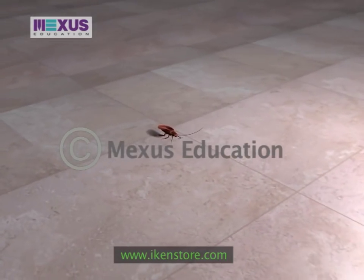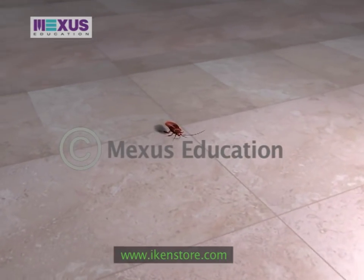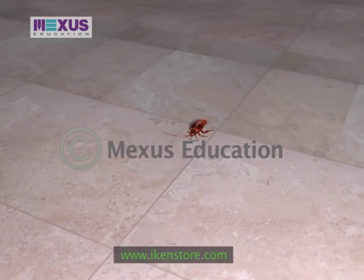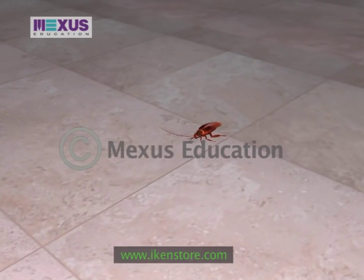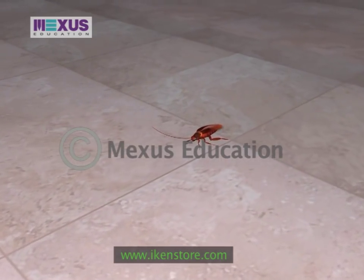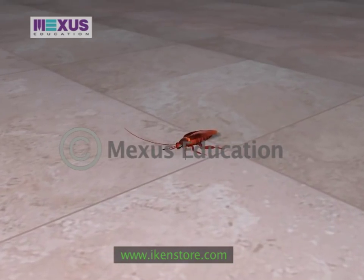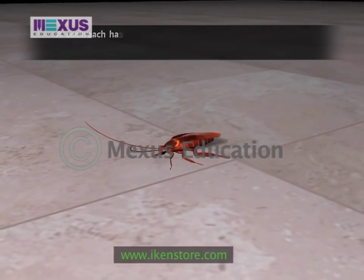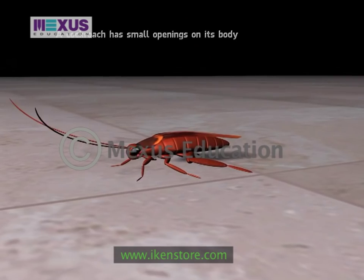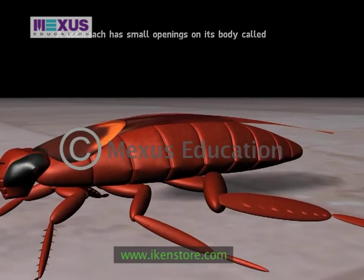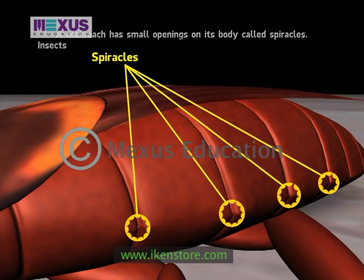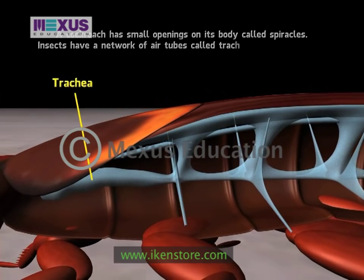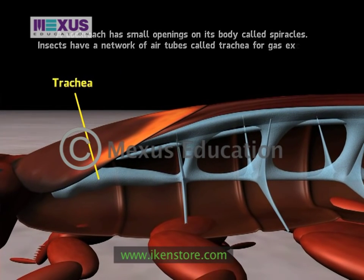Unlike animals such as humans which have chest cavities, insects like cockroaches have a different respiratory system. A cockroach has small openings on its body called spiracles. Insects have a network of air tubes called trachea for gas exchange.